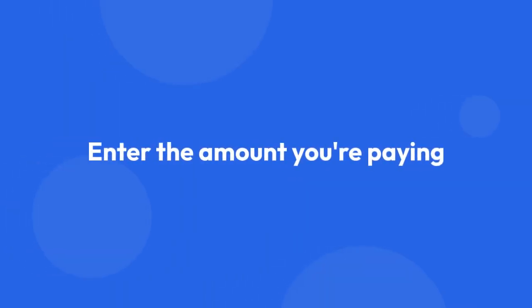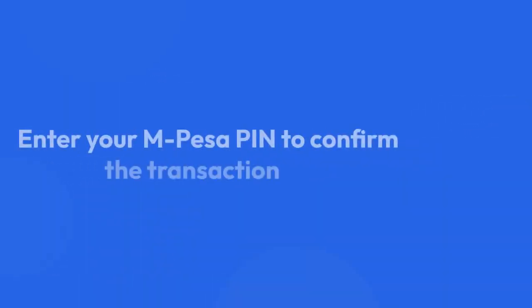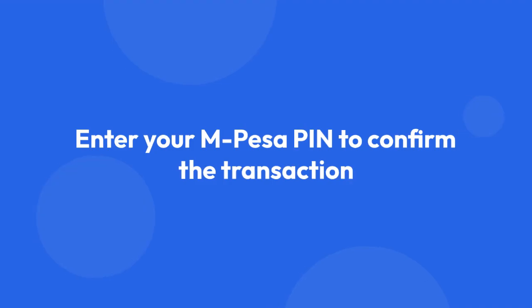7. Enter the amount you're paying. 8. Enter your M-Pesa PIN to confirm the transaction. 9. You'll receive an SMS confirmation once the payment is successful.